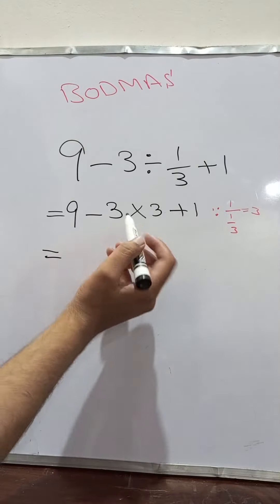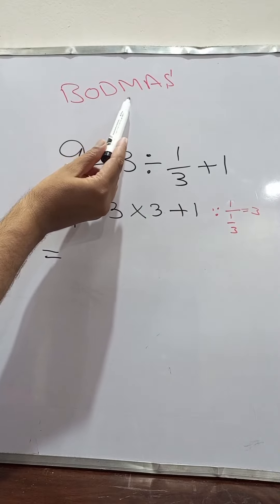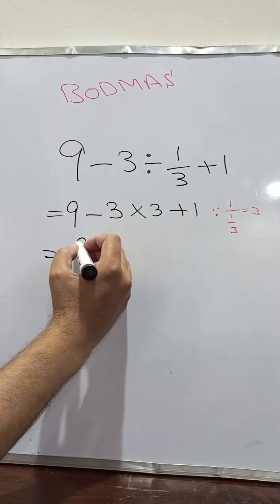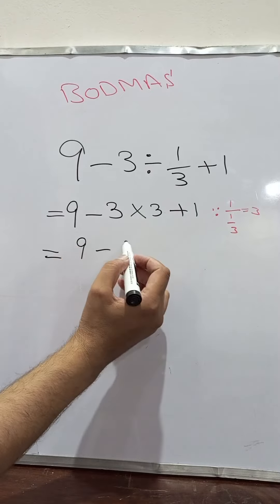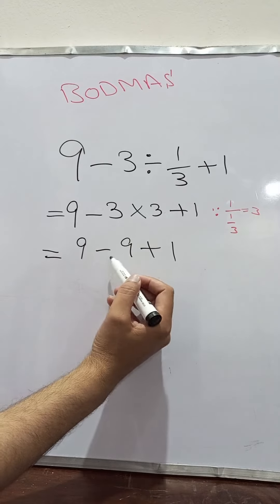Now we have to multiply 3 because after division we have to perform multiplication. So, I am going to multiply 3 with 3 which becomes 9. Plus 1 remains the same.